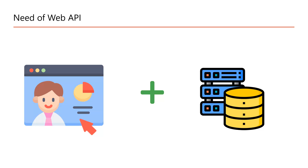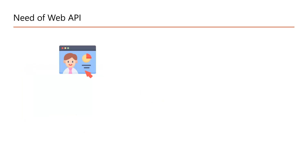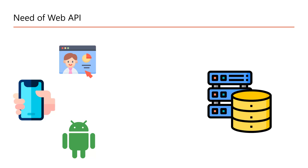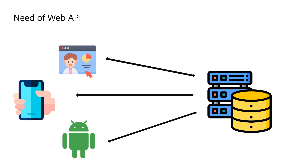Now suppose, after some time, along with this website you need to create an iOS application and also an Android application. Now you have three separate applications for your project, and remember we already have one database. All the information about this website and these apps is available in this database, and because we have three applications and one database, all these applications have to communicate with this database.